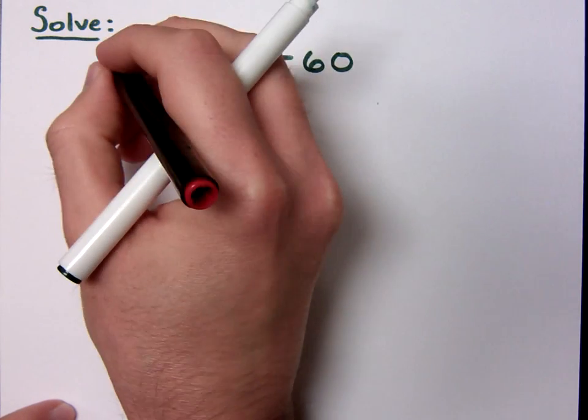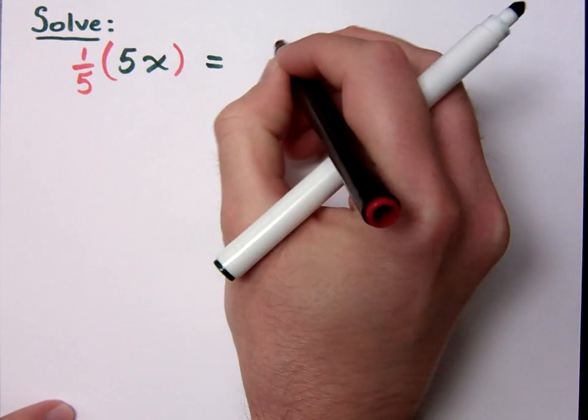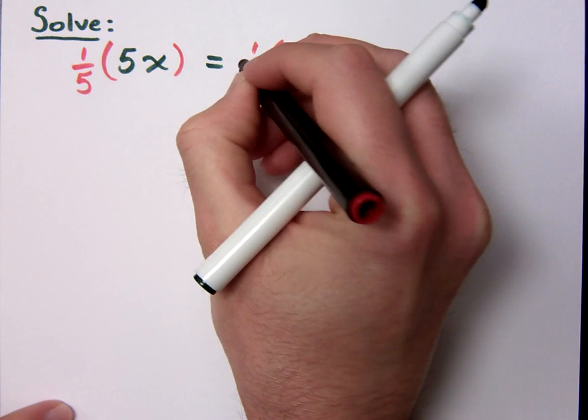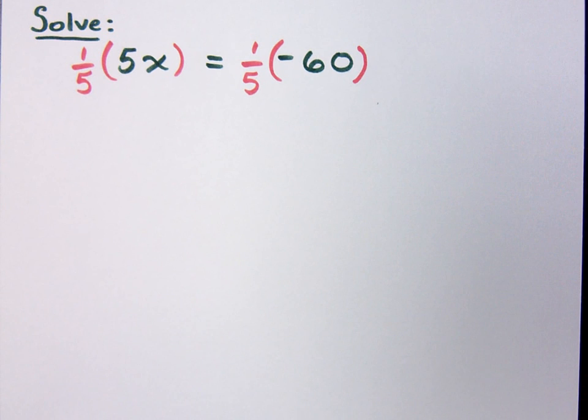And what we can multiply both sides by is one fifth. Now, what's the connection between the coefficient of 5 and one fifth? What's that connection? It's the reciprocal.